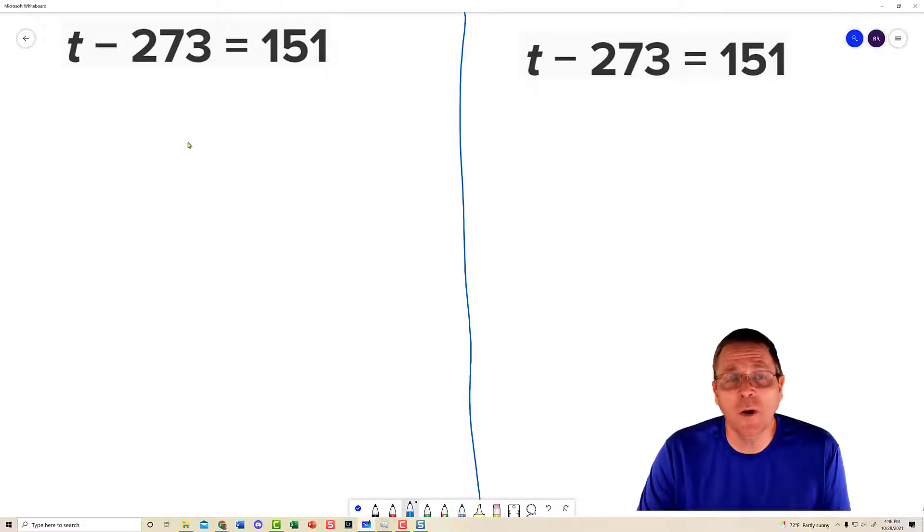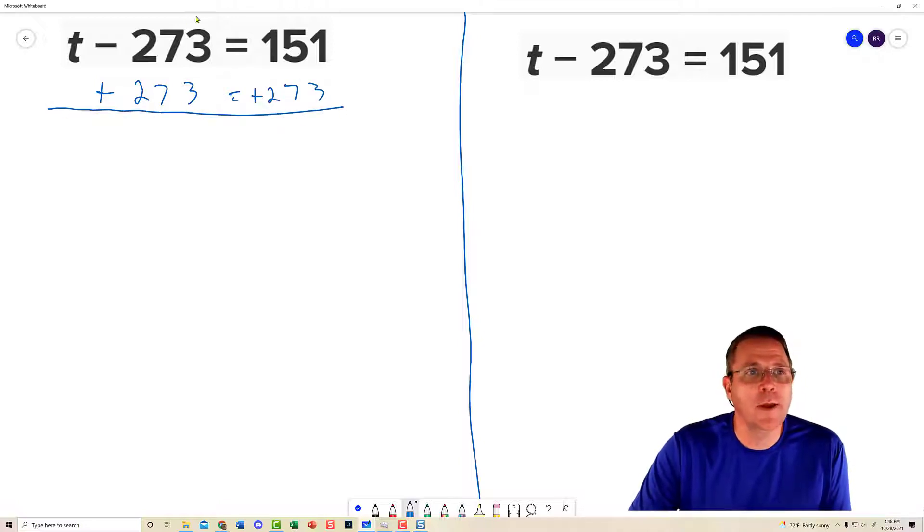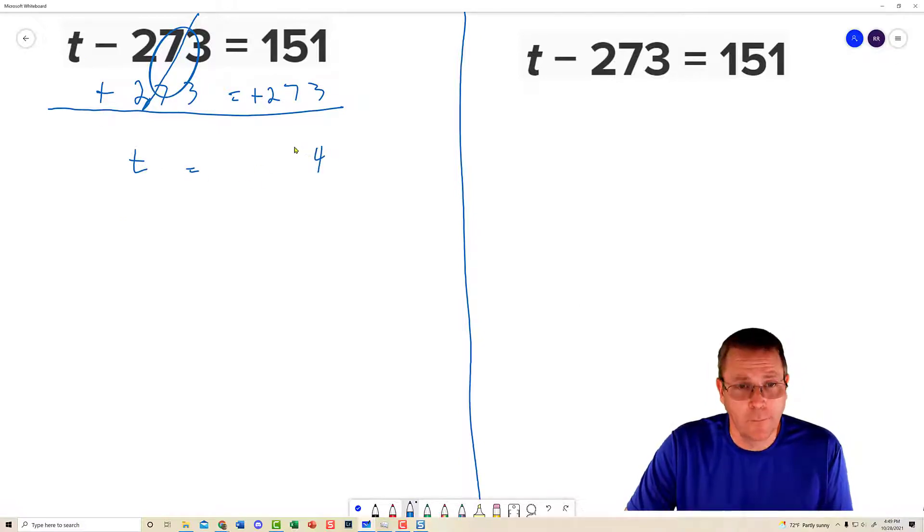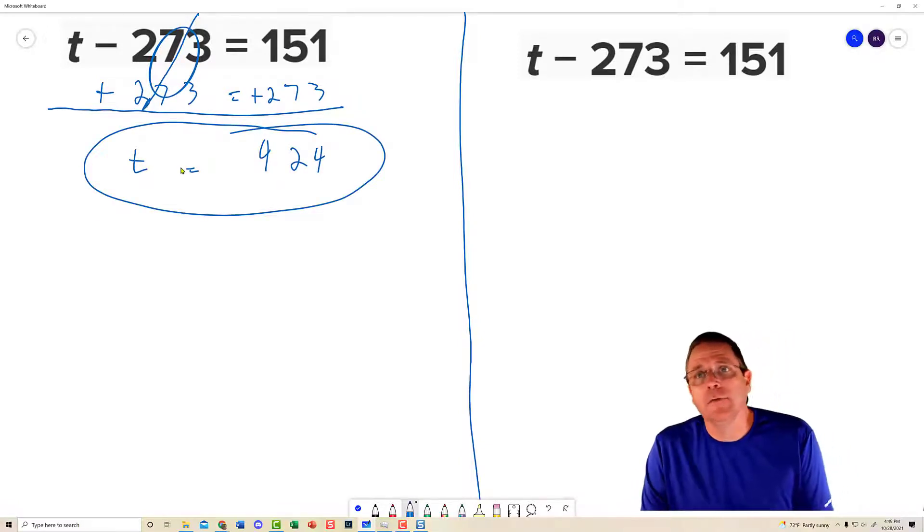So all I'm going to do is take and add the opposite of this, which is 273 to both sides. Plus 273 over here. When I do that, these numbers zero each other out. You can even put a big zero there if it makes you feel better. Leaving nothing but t is equal to. And over here, I'm going to do 4, a 12, and another 4. So the final answer is going to be t is equal to 424.